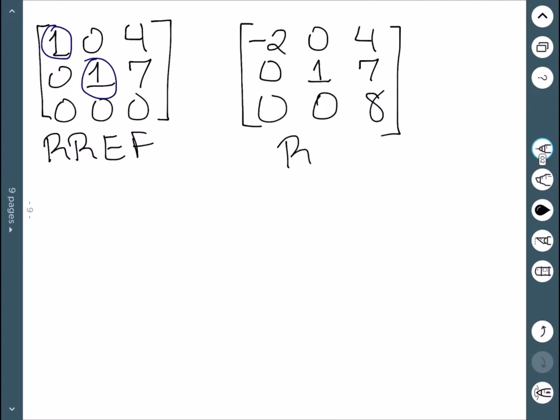This one is in row echelon form. You can see our three pivots: the -2, the 1, and the 8, move down and to the right. Everything below these entries is a zero. And so this is in row echelon form.